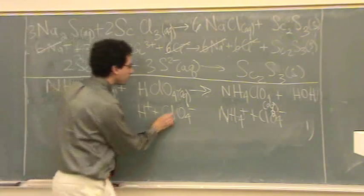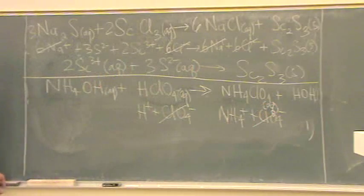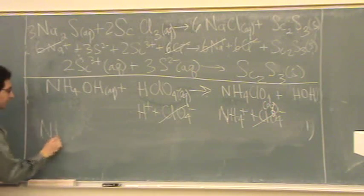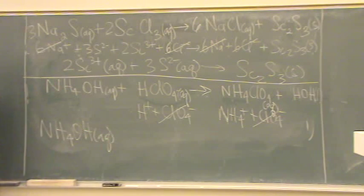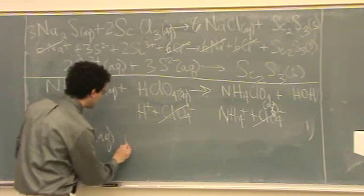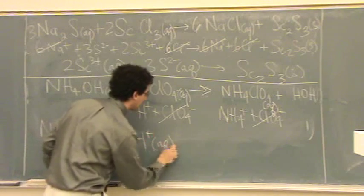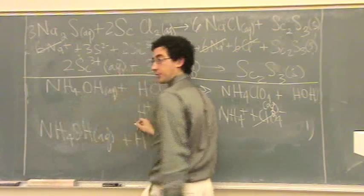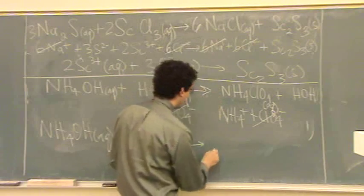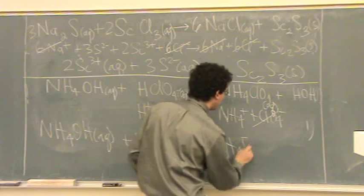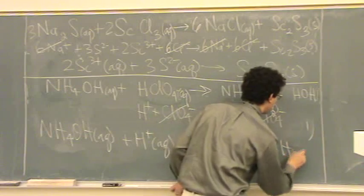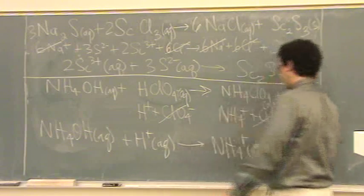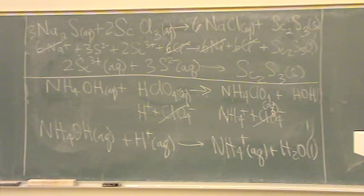Now see what cancels. Only the chlorates will cancel. So I'm left with NH4OH. It is aqueous, but it's not a good electrolyte. Plus H+, which is also aqueous. All ions we're going to call aqueous. And then it goes to NH4, which is aqueous. Plus H2O, which we made in terms of the liquid. And there's your net ion. Any questions on that one?